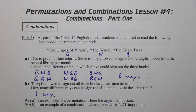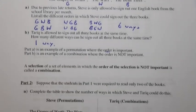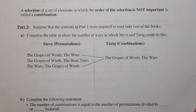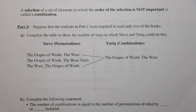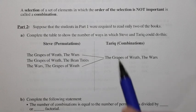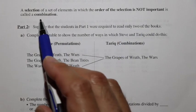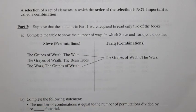Now, Tariq could do the exact same thing, but if we're talking about a selection where as long as he had the three books and the order was not important, then that is an example of a combination. A selection of a set of elements in which the order of the selection is not important is called a combination.